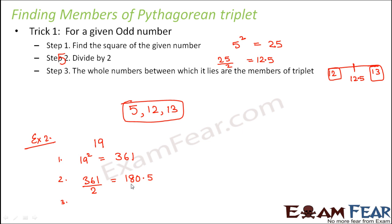Step number 3 what are the whole numbers between which 180.5 is located? It is located between 180 and 181. So therefore 19, 180, 181 forms the Pythagorean triplet.